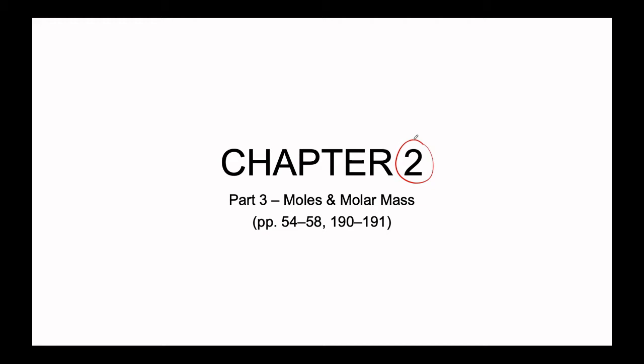We've talked about how atoms can vary in the sense that we can have different isotopes of different masses, and we can have different ions with different charges. Well, what could be left when it comes to discussing the construction of the atom? Today we are going to be talking about how we count atoms.